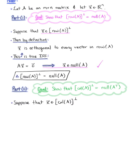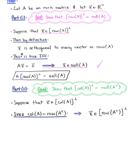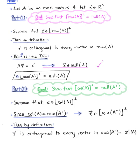Let's begin by supposing that vector X is in the orthogonal complement of the column space of matrix A. Since we know that the column space of matrix A is equal to the row space of the transpose of matrix A, this implies that vector X is in the orthogonal complement of the row space of A transpose. By definition, vector X is orthogonal to every vector in the row space of A transpose, which equals the column space of matrix A.